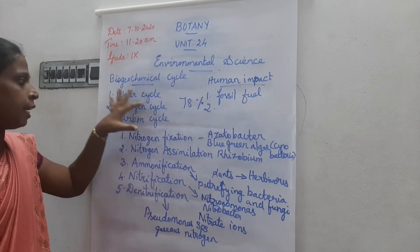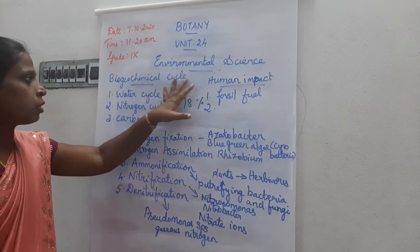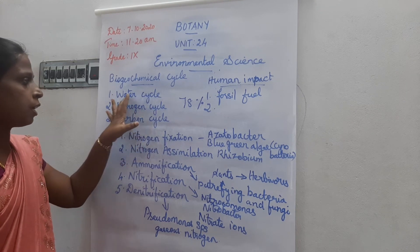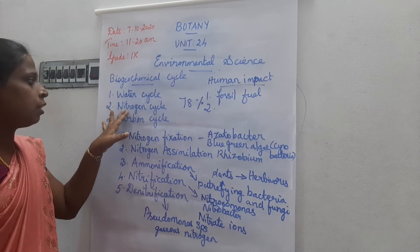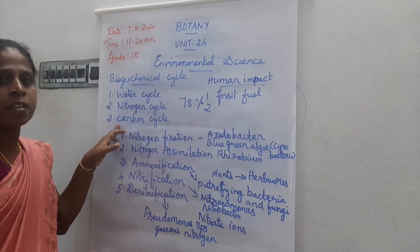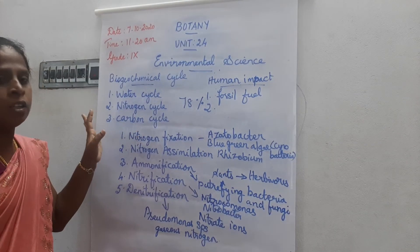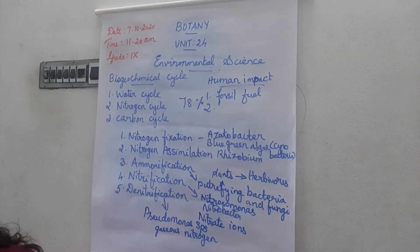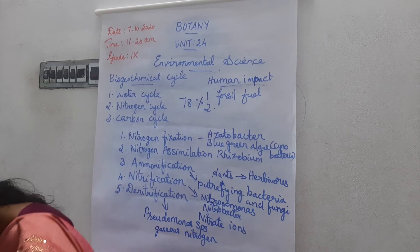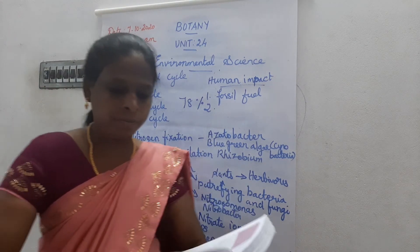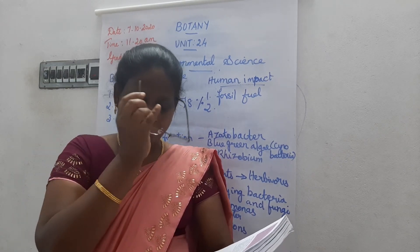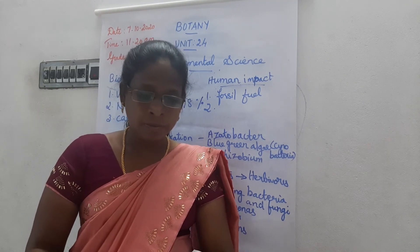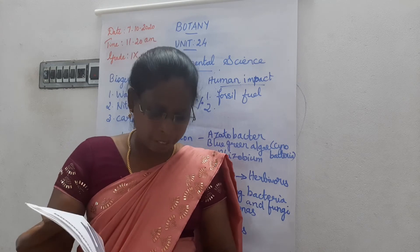Today we learned about the nitrogen cycle. The biogeochemical cycle consists of three types: water cycle, nitrogen cycle, and carbon cycle. Last class we learned the water cycle, today we learned the nitrogen cycle, and next class we will learn the carbon cycle. Students, now you can mark the questions. Take your textbook, page number 300.